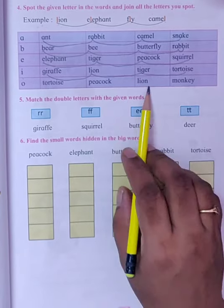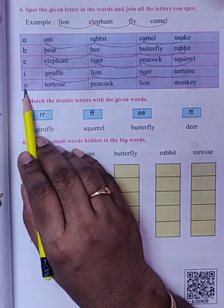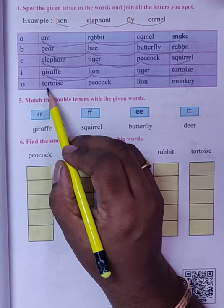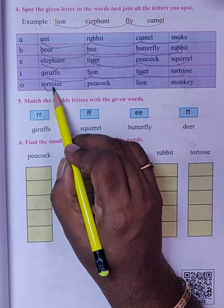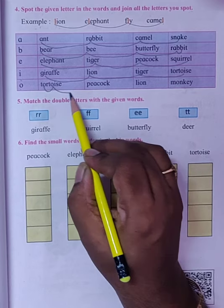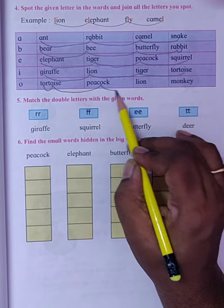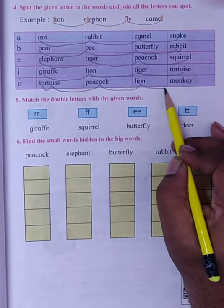Tortoise, Peacock, Lion, Monkey. Here they have asked us to join O of all the words. So Tortoise O, there are two O's in Tortoise, so we will join twice in Tortoise, and then O in Peacock, O in Lion, and the O in Monkey.